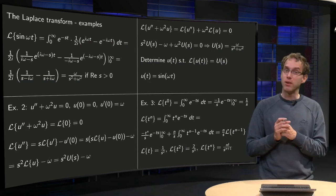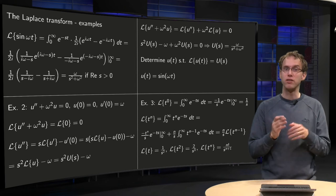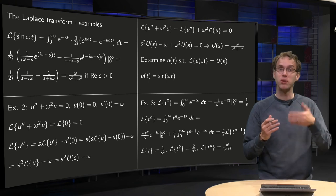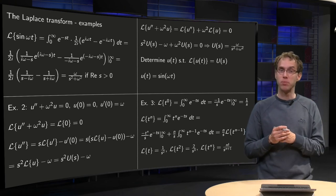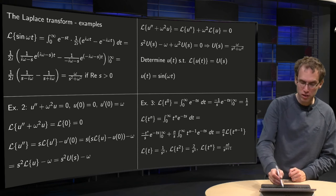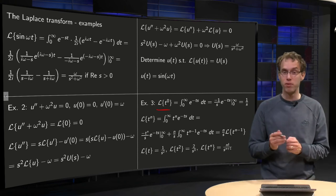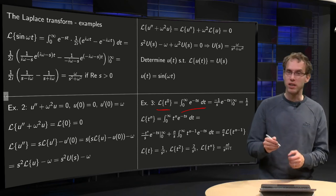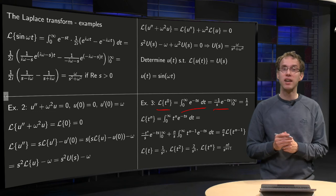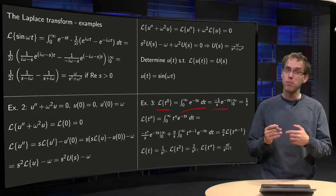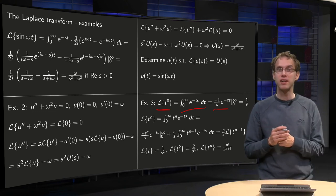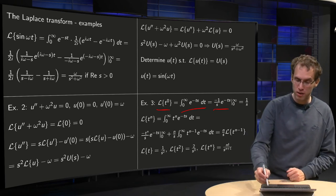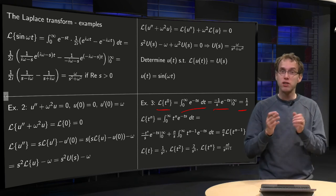Let's take a look at a third example: finding the Laplace transform of functions of the form t to the power n, where n is some positive integer. We start with the Laplace transform of t⁰ = 1. We integrate e to the power minus ts times 1 with respect to t. That's trivial — you get minus 1 over s times e to the power minus ts evaluated at the boundaries, giving 1 over s, provided the real part of s is greater than zero.